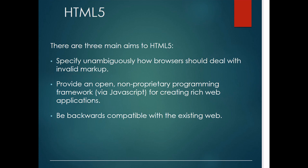There are three main aims of HTML5: first, how the browser should deal with invalid markup; second, to provide an open, non-proprietary programming framework using JavaScript for creating web applications; and third, backward compatibility with the existing web — that is again one of the aims of HTML5.